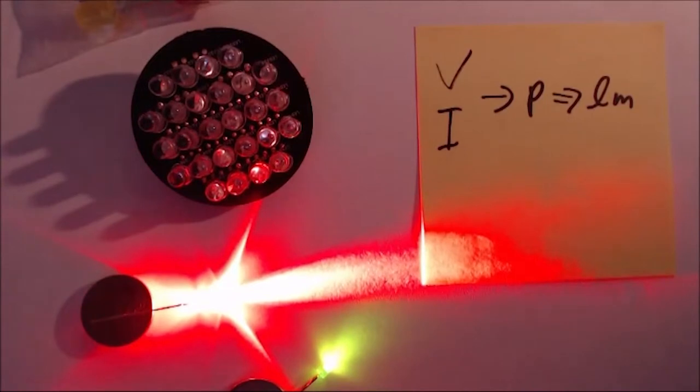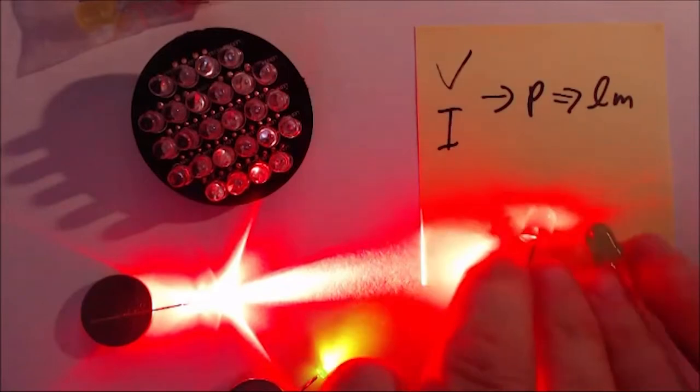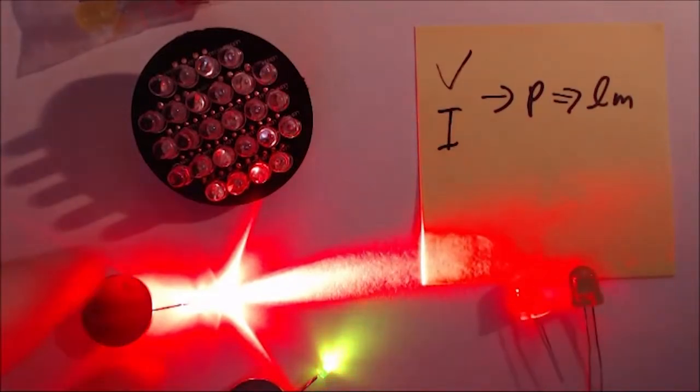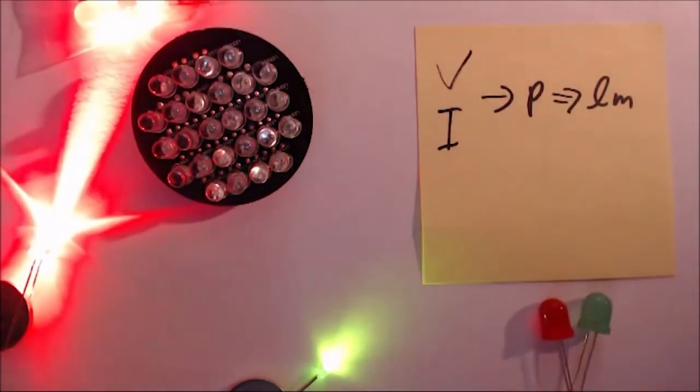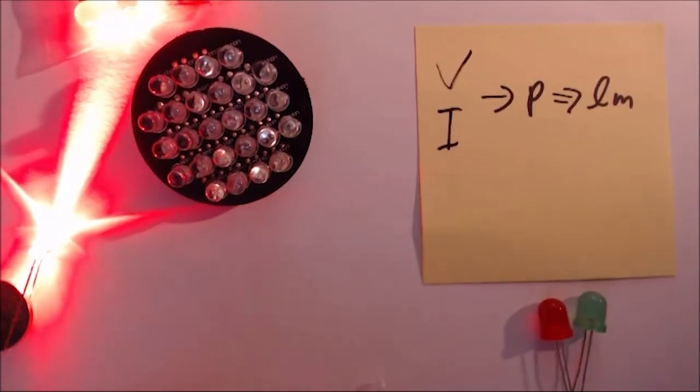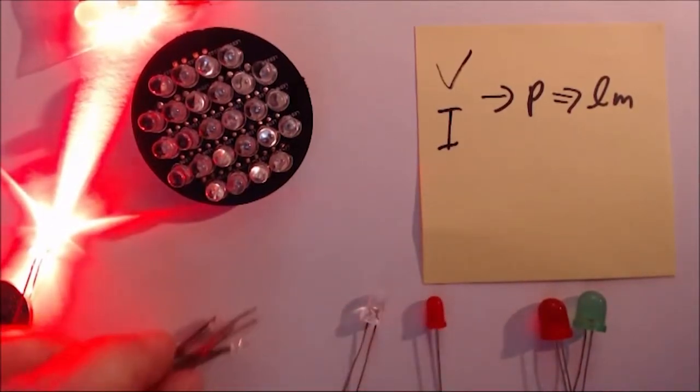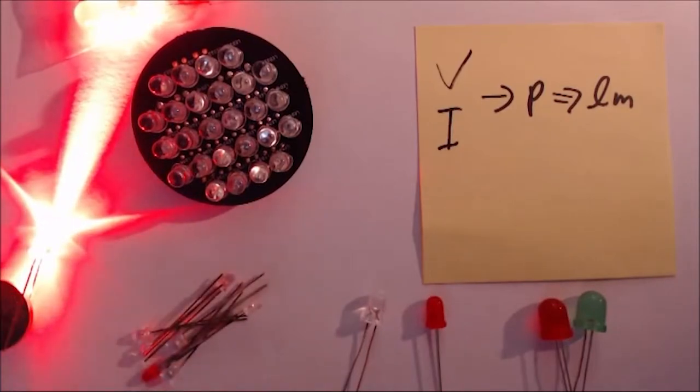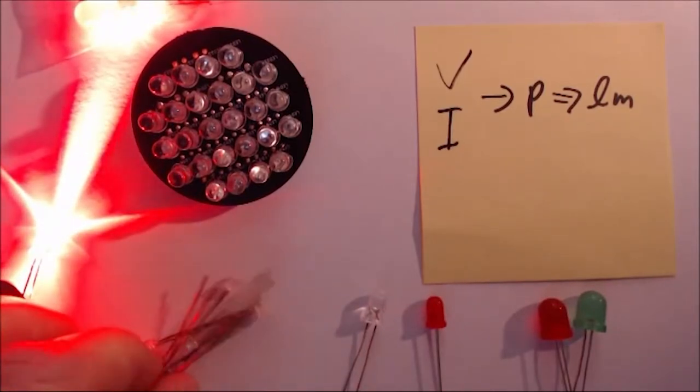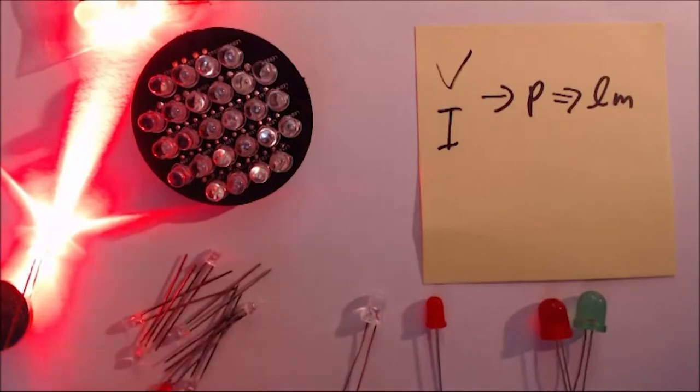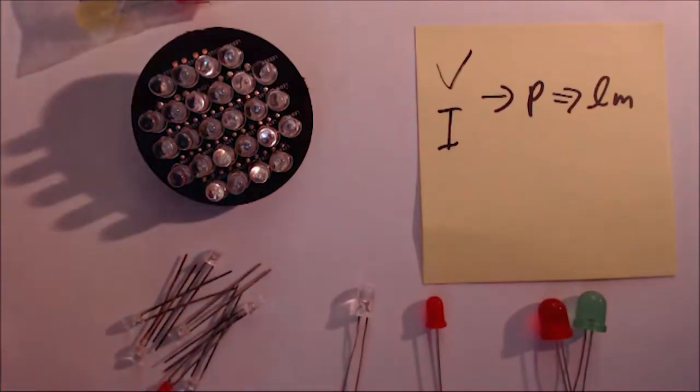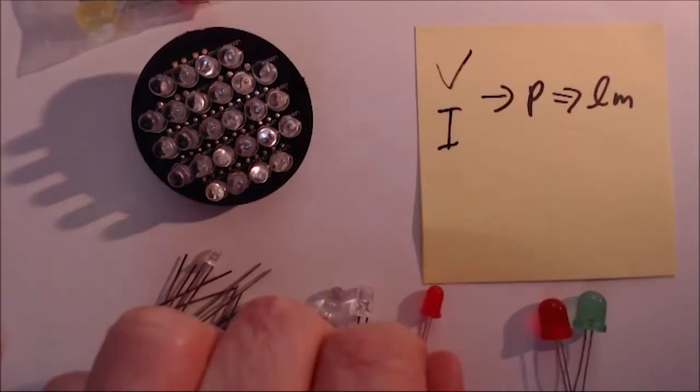LEDs come in various sizes. So, for example, here are some 8mm LEDs, some standard 5mm LEDs and smaller 3mm LEDs. You can also see that some come with a white or clear body and others have colored bodies.